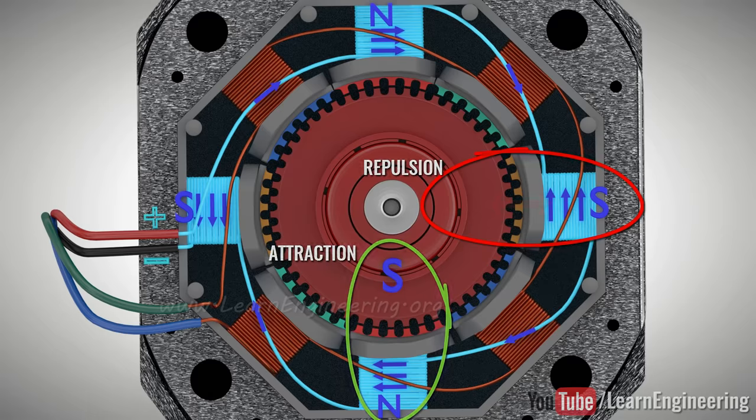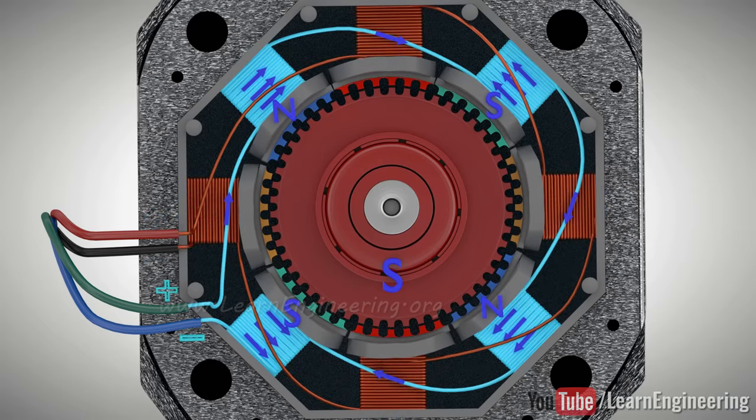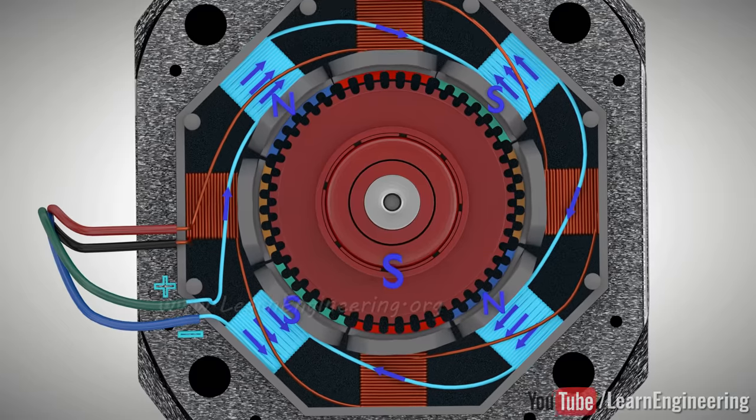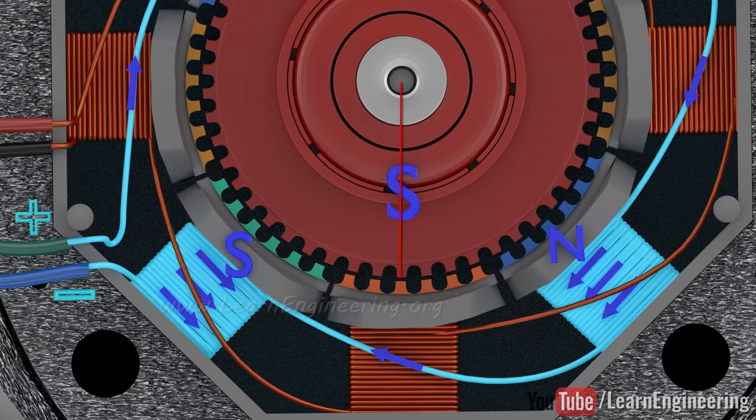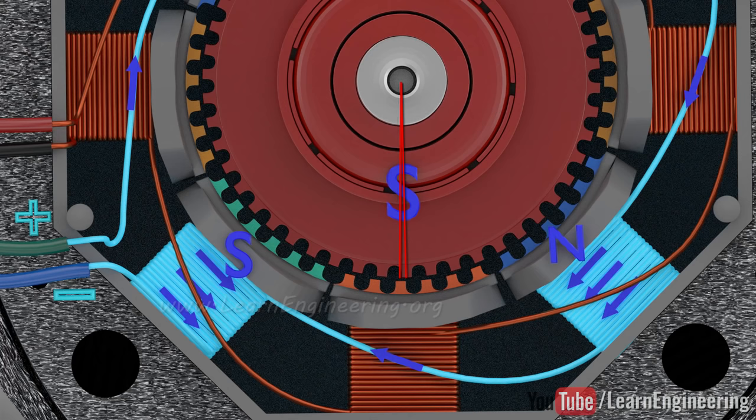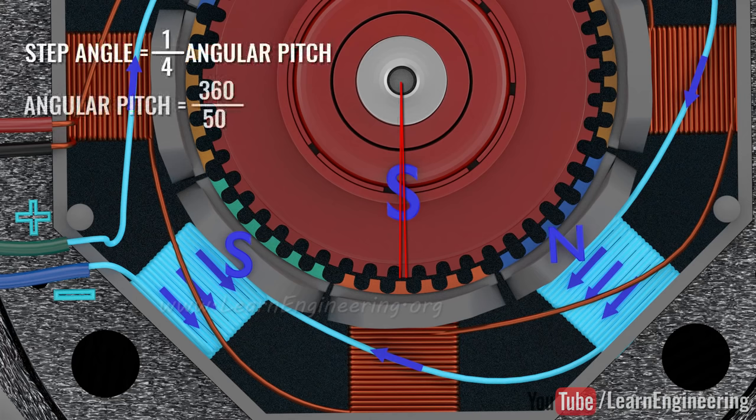When coil B is energized, observe what happens to the rotor. It has to rotate by a small angle in order to align with the new north pole. It is clear that this angle is one-quarter of the angular pitch. In other words, the rotor moves by 1.8 degrees.